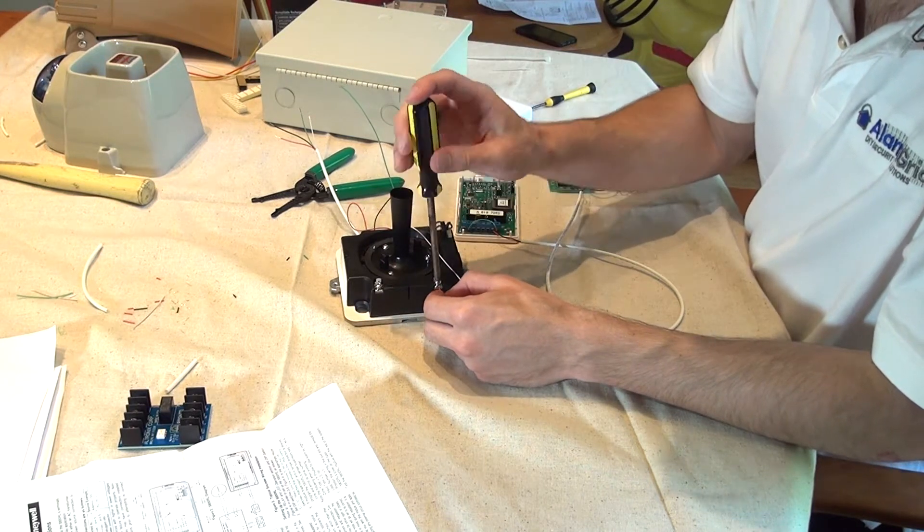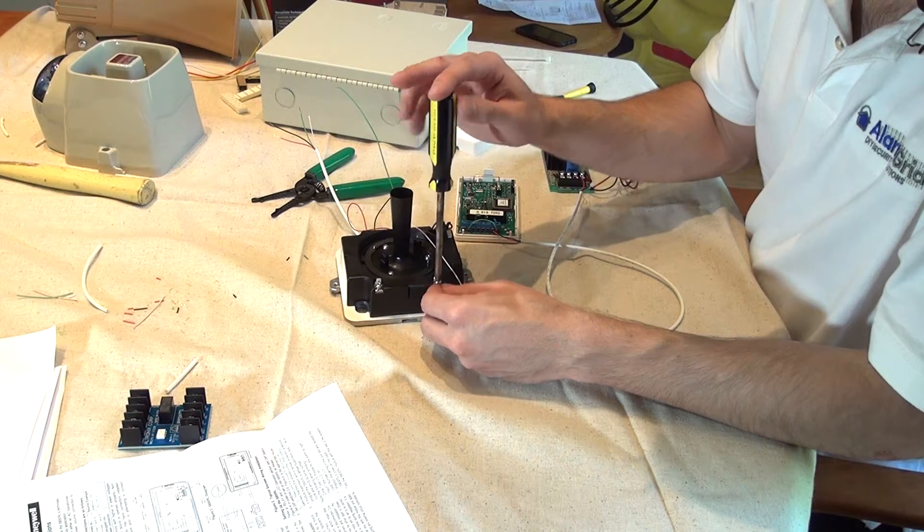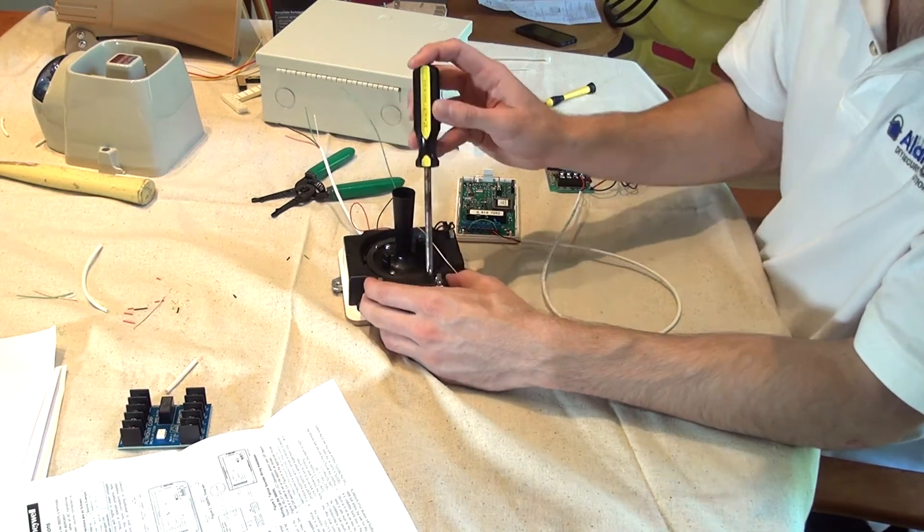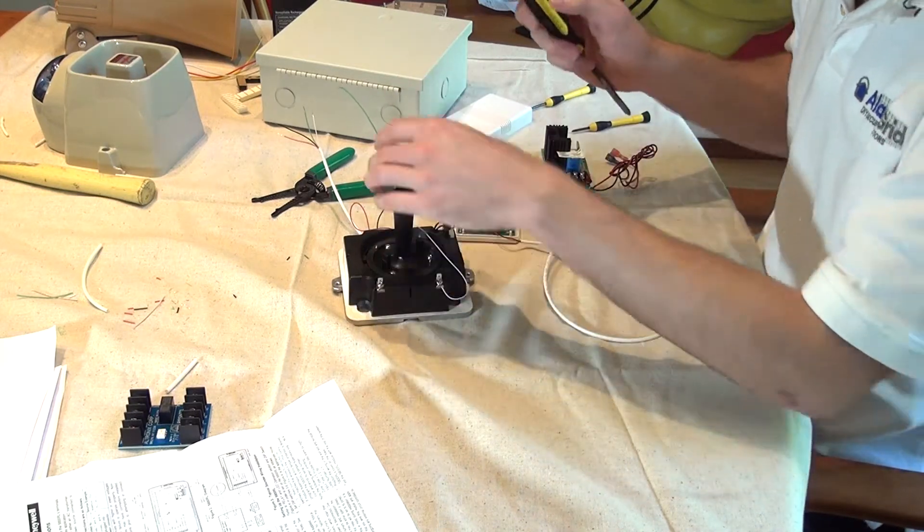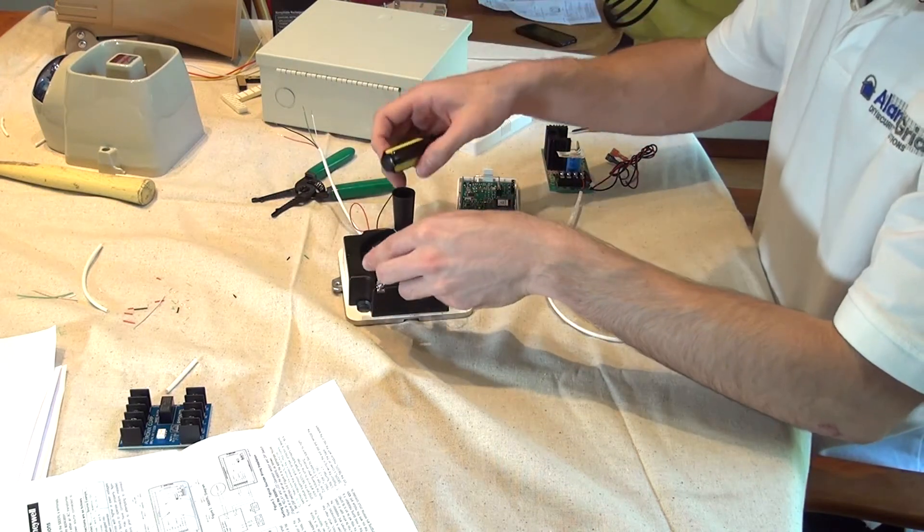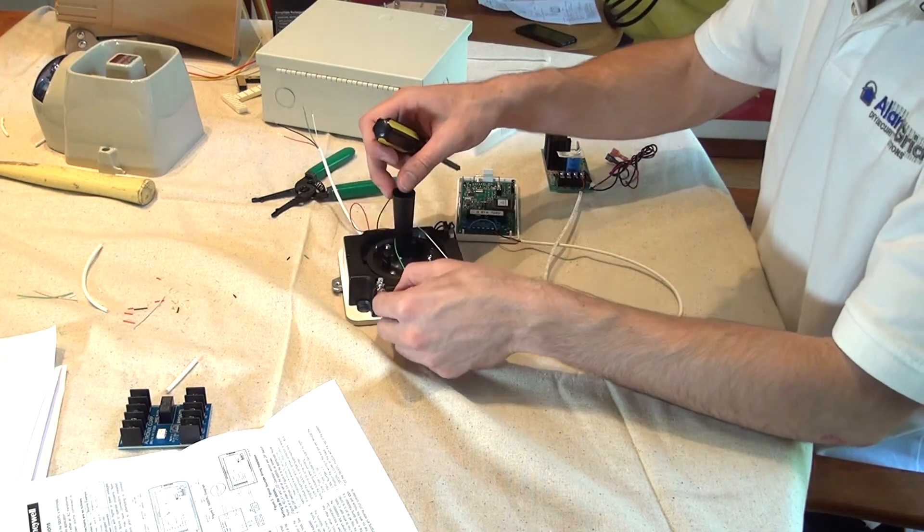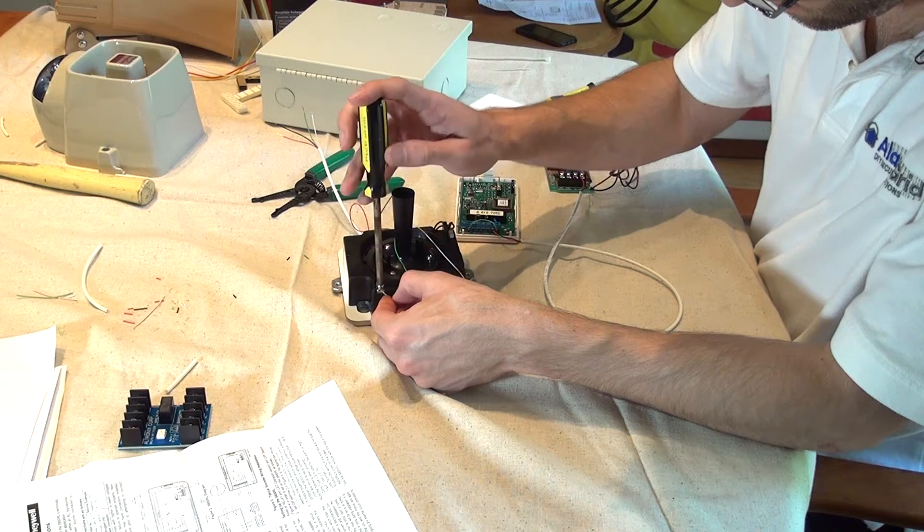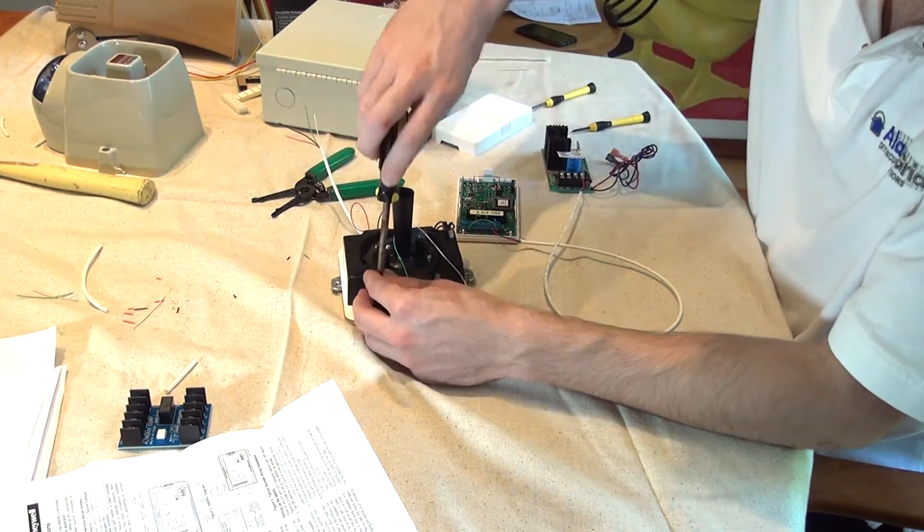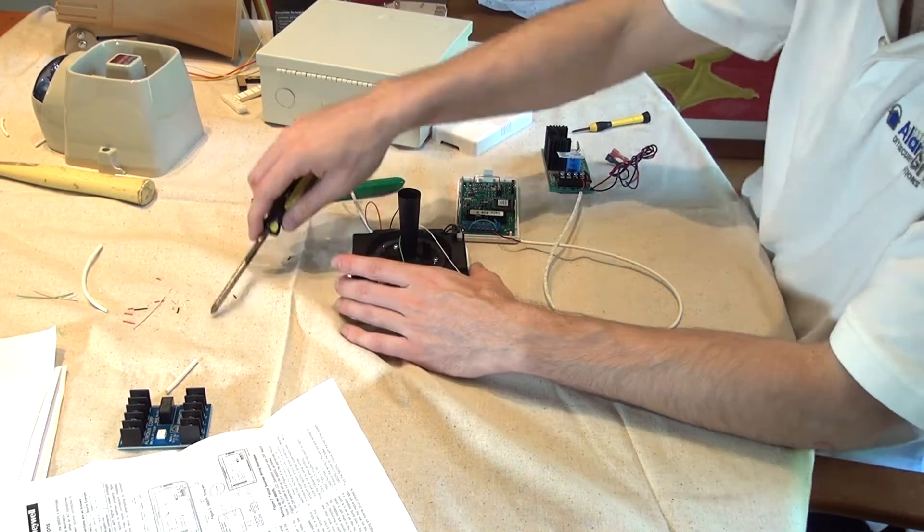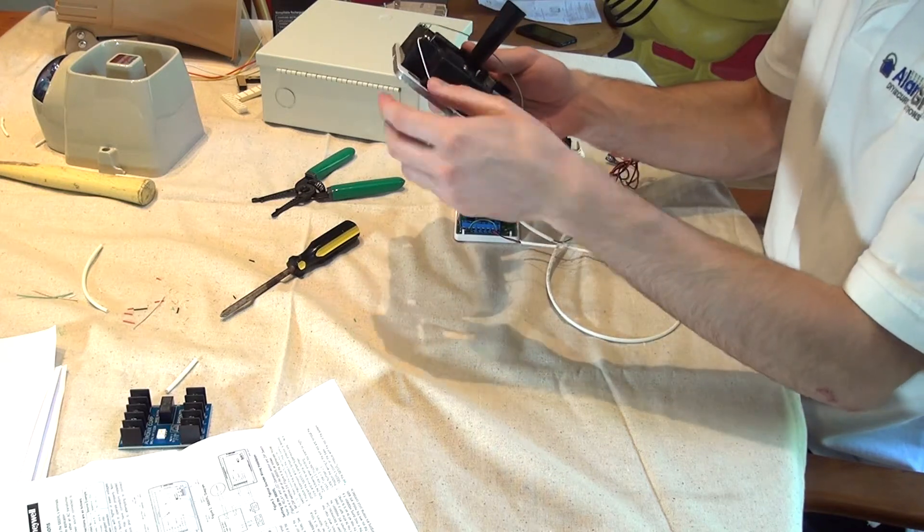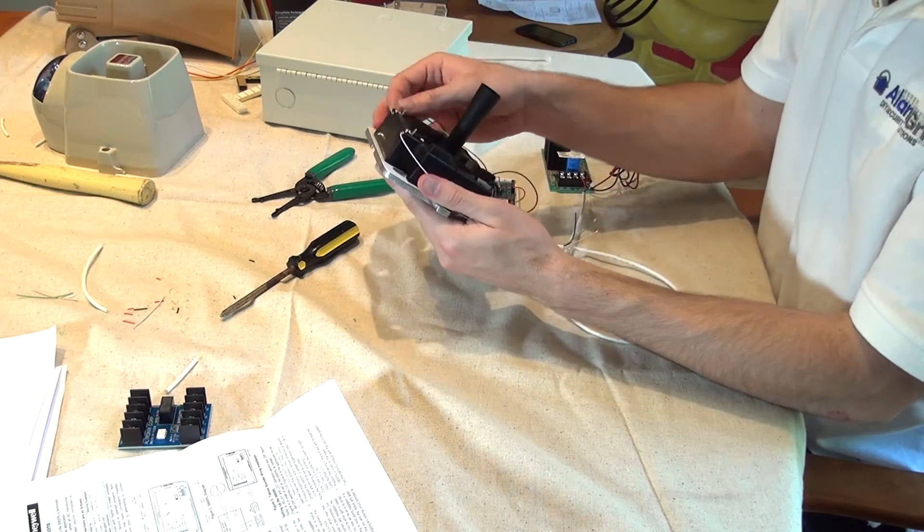On our strobe, we have our negative, it's labeled negative. You probably can't see it in the video, but when you're working with it, you'll see it. This one says negative, this one says positive. We're going to take our green to positive. Screw it down nice and tight. We now have our connections for both our siren and our strobe.